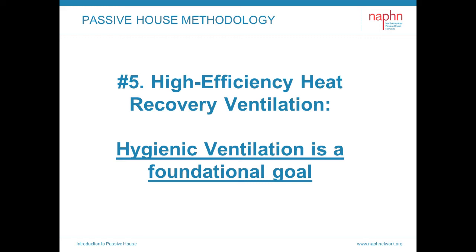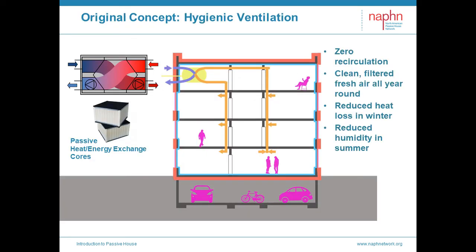Number five: high-efficiency heat recovery ventilation. Recall the platonic definition of passive house — a primary goal was to ensure effective hygienic ventilation. Today, in coping with the COVID-19 pandemic, hygienic ventilation is a hot topic. Add to that inescapable forest fire smoke and the long history of poor health outcomes for marginalized communities on the fence line of industrial production. Hygienic ventilation should be a foundational goal, and the airtight enclosure sets us up for success — there's no pollution entering willy-nilly. We have control of the interior air.